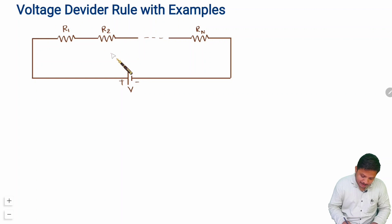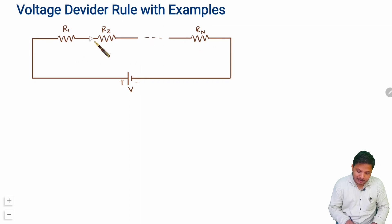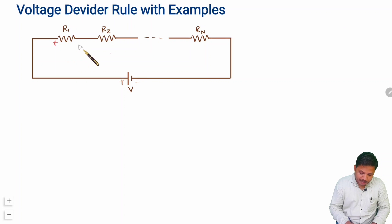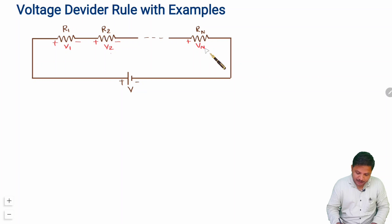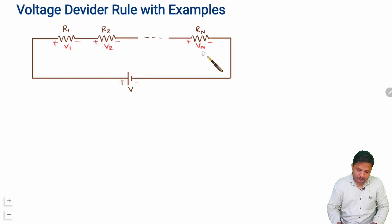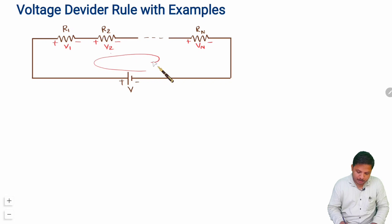I have connected resistances in series — R1, R2 up to Rn — connected with voltage source V. Our agenda is to identify the voltage happening across R1, let us say V1; the voltage across R2, let us say V2; and the voltage across Rn, let us say Vn. So our agenda is to understand how to identify V1, V2, up to Vn. Because of supply V there is a flow of current in the loop, let us say this current is I.